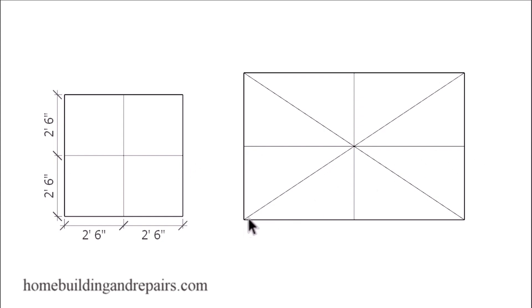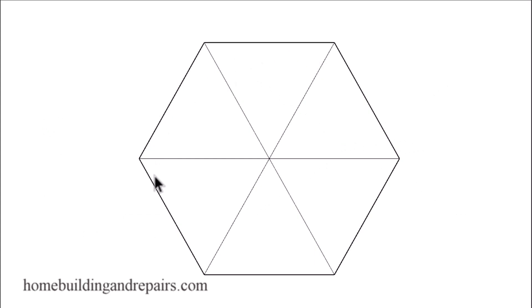Or you can simply connect each corner with a straight line to find the center. You can use this method on all even-sided polygons like this six-sided hexagon.